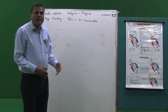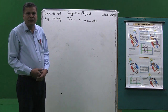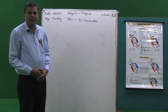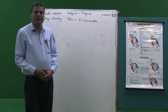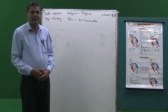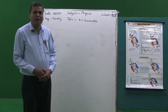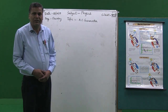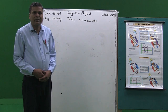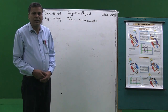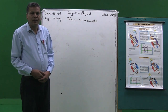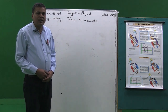An AC generator is a device which is used to convert mechanical energy into electrical energy. The principle of the AC generator is the phenomenon of electromagnetic induction. In electromagnetic induction, when the magnetic flux linked with any coil changes, an induced current is produced in the coil. This is the principle of the AC generator.